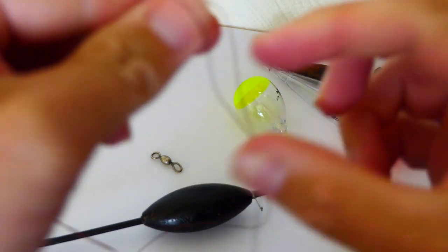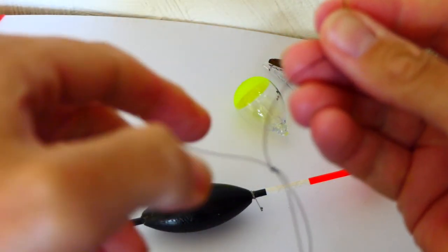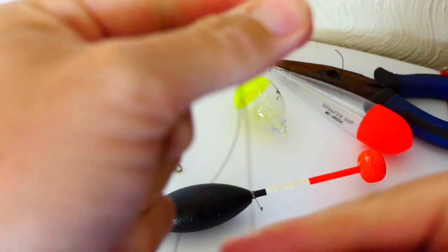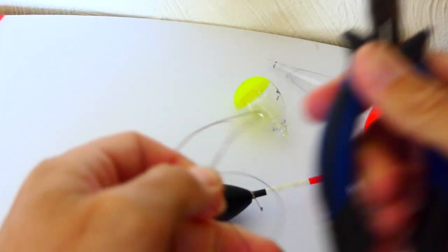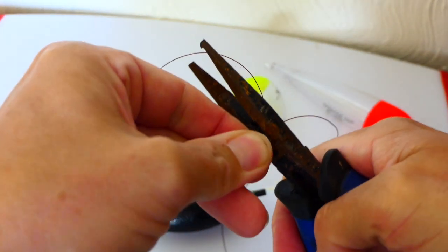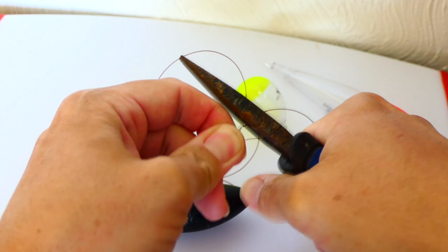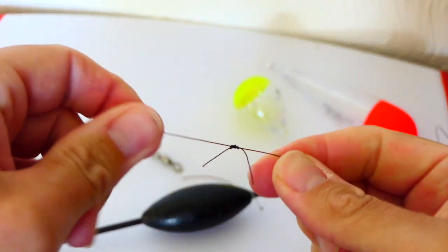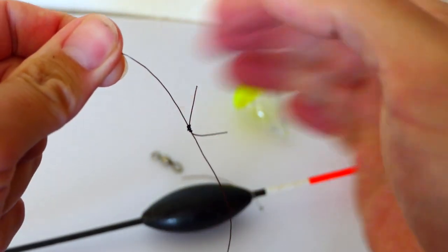You've got some long ends there you see. Now you just grab your pliers and you just snip them long ends off. Leave about, I don't know, leave at least a centimeter or so each side. Make sure you don't snip the main line off. There you go, that's your stop knot.